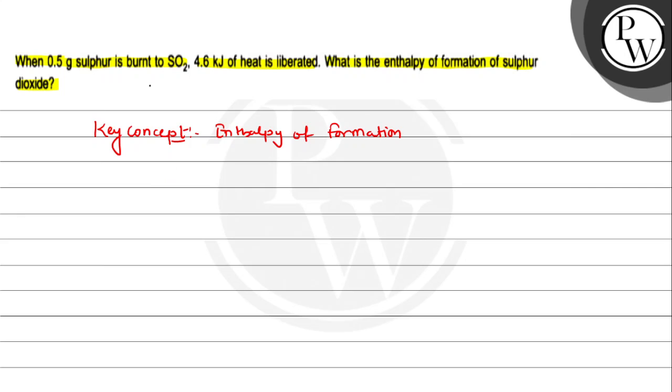So the question states that 0.5 gram sulfur on burning gives 4.6 kJ of heat. The question already mentioned that this heat is liberated. Clear? So for 1 gram, if we calculate...